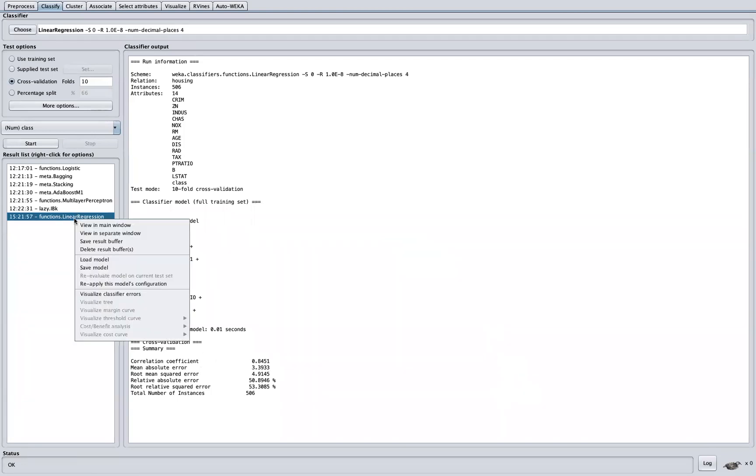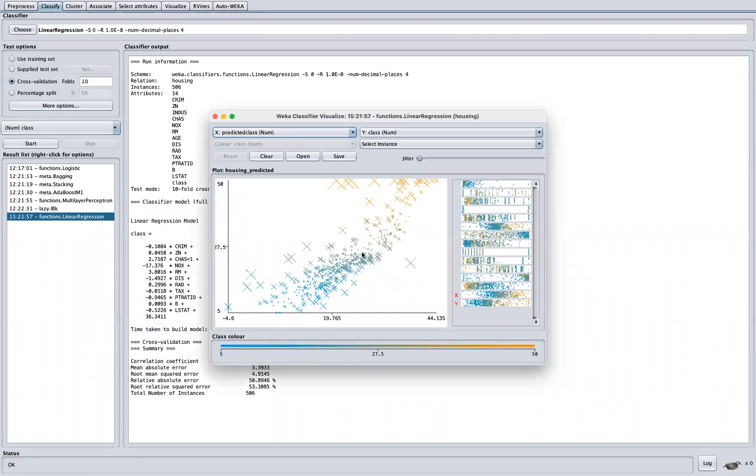So if we just look at visualize the classification error, we'll see that they are randomly distributed here. X here is a predicted class and Y is our actual values.